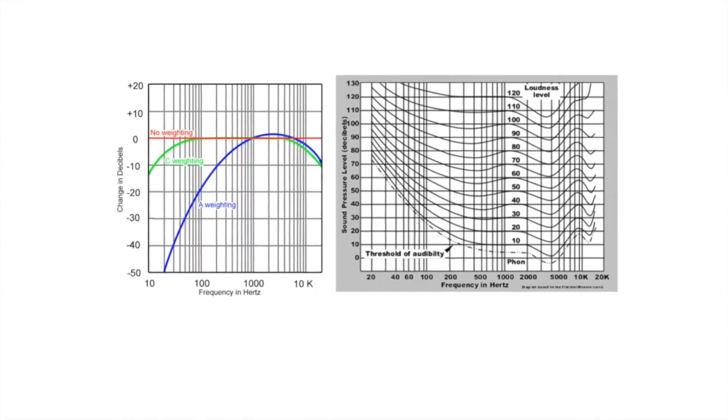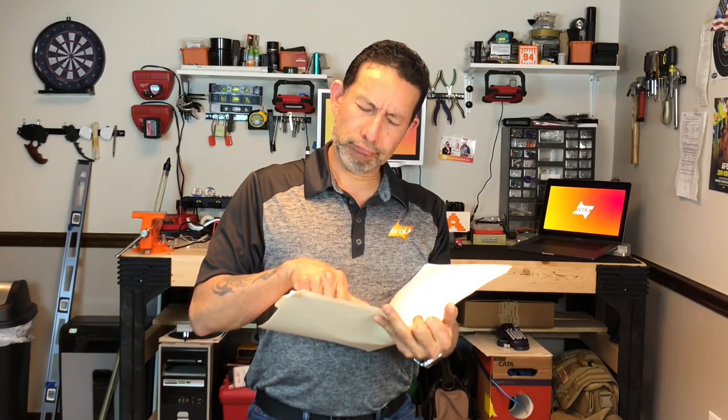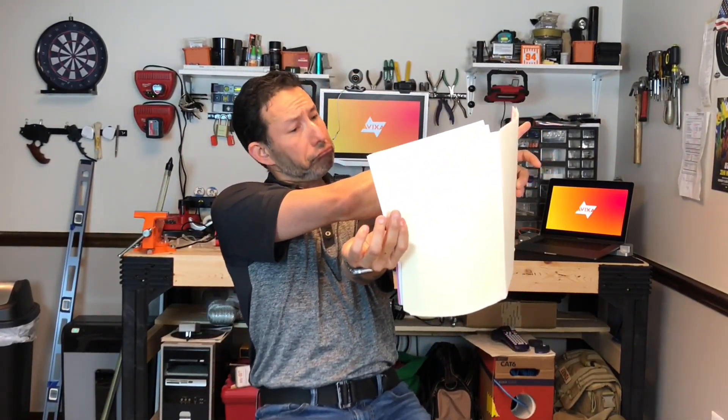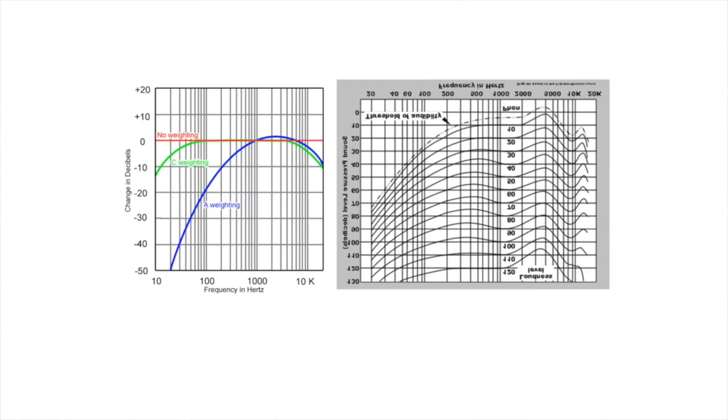That's actually much closer to how a 100 hertz 50 dB tone would sound to a person, because humans don't hear a low-pitched sound very well. Look at the weighting curves next to the equal loudness contours for human hearing. If you flip the loudness contours upside down, the weighting curves look similar to the inverse of the equal loudness curves.